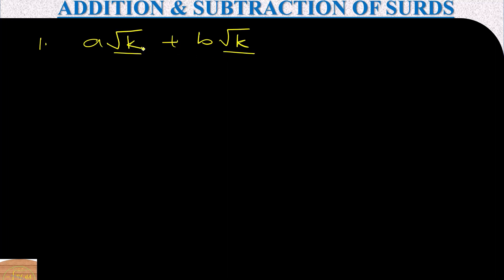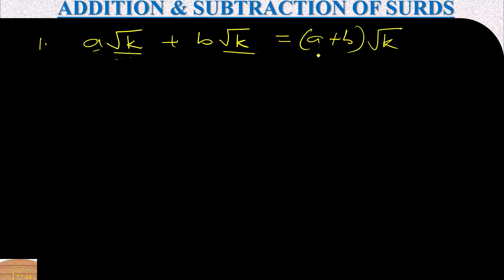So let's check — under the root sign we have √k in both terms. So we can add the coefficients: we have a plus b, then we pick one of the √k. So we get (a+b)√k.